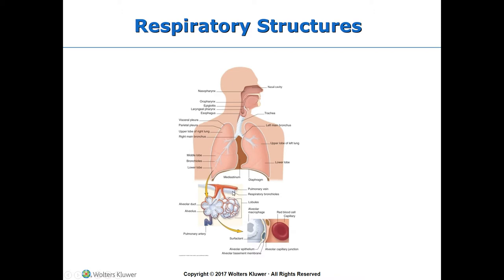The bronchioles are subdivided into terminal bronchioles and respiratory bronchioles. The respiratory bronchioles connect to structures called alveolar ducts, which lead to collections of small chambers called alveoli. Surrounding the alveoli are capillaries that are branches of the pulmonary artery.